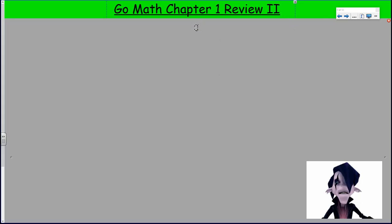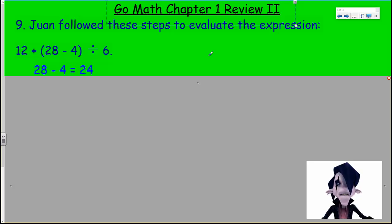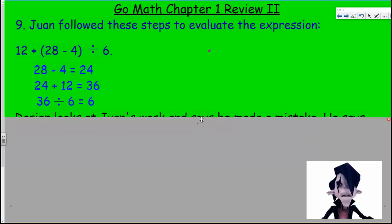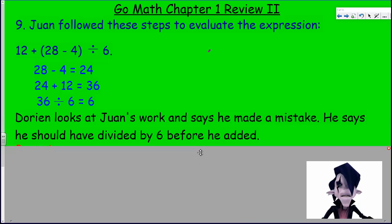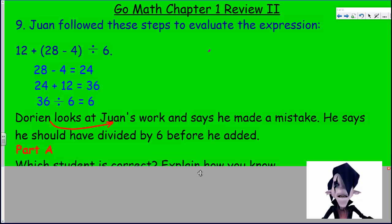Let's keep on moving. I forgot to start my timer, so I don't know how we're doing on time here. Now, here we go. Juan followed these steps to evaluate the expression. This is coming straight off your workbook. We have 12 plus, and then we have the difference of 28 and 4, divided by 6. Juan followed these steps to evaluate the expression. Dorian looks at Juan's work and he says he made a mistake. He says he should have divided by 6 before he added. Let's take a look here.